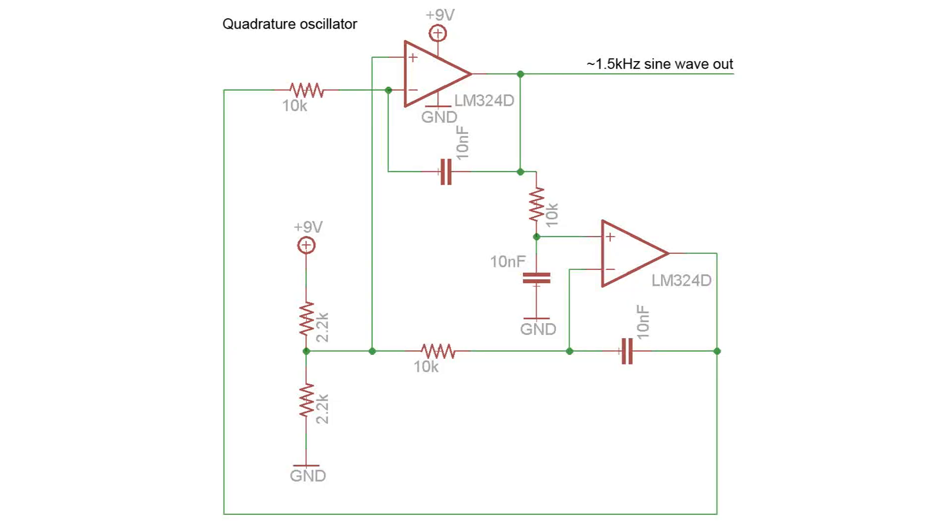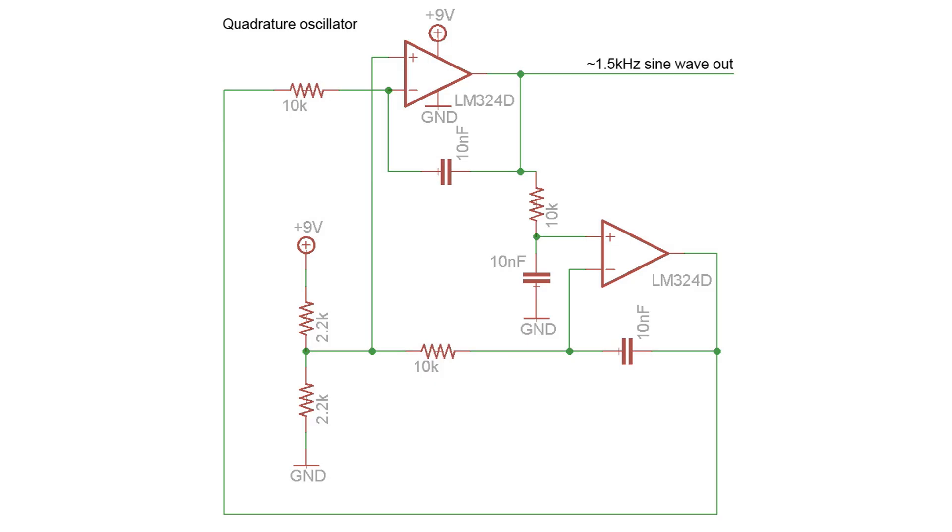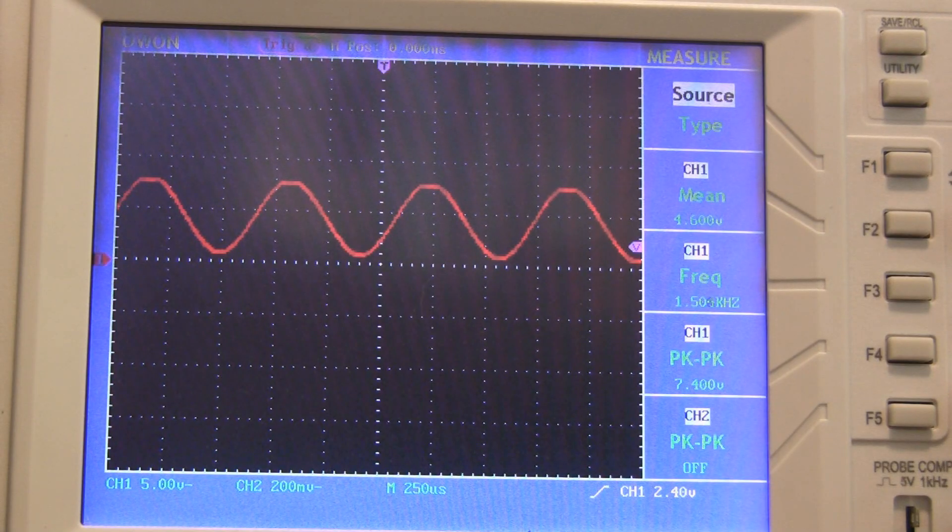Okay, that was a square wave oscillator. Let's take a look at a sine wave oscillator. This is a quadrature oscillator based on an LM324 op amp. If I probe the output of the oscillator, I can see that I'm getting a sine wave of around 1500 hertz.